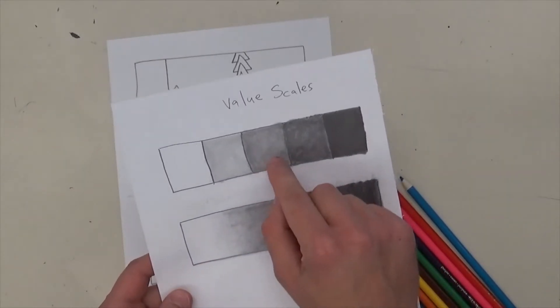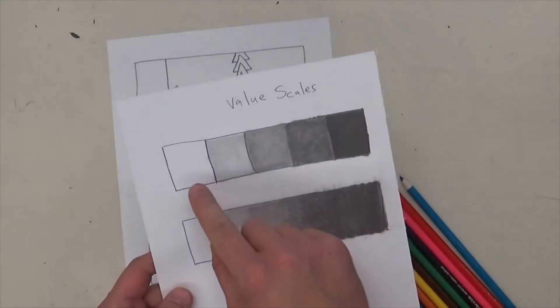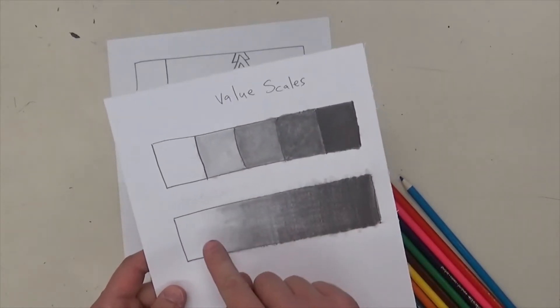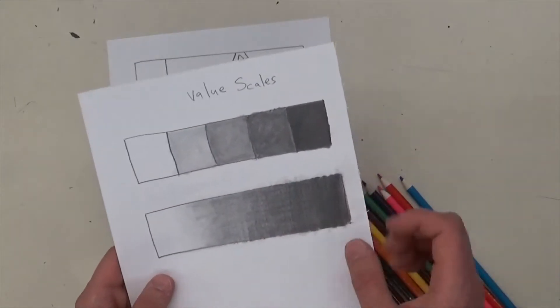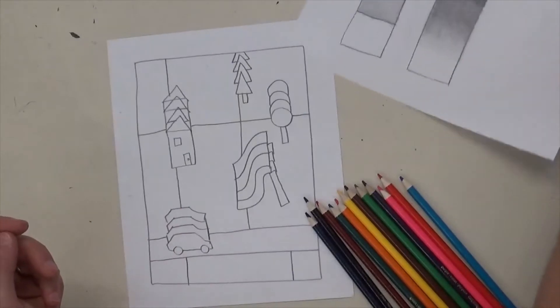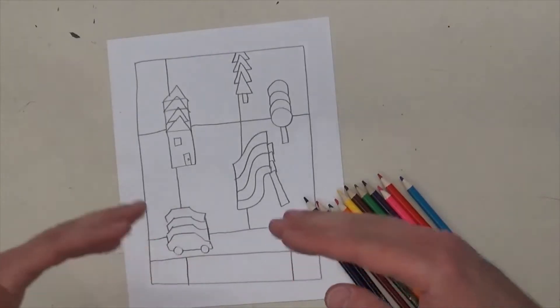If I push down normally, you might get a medium value. I could push down really lightly, just barely touch the paper, I'd get a very light value. Or I could push down really hard and get a dark value. So that's what we're going to do for this project. We're going to create different values.